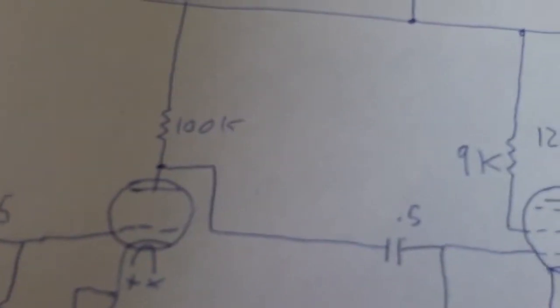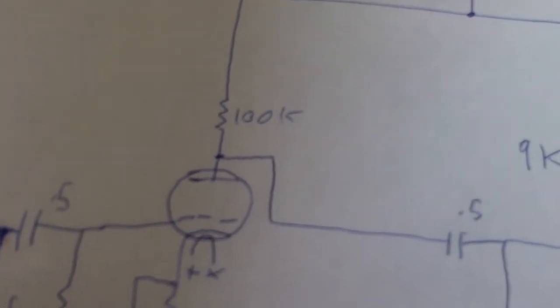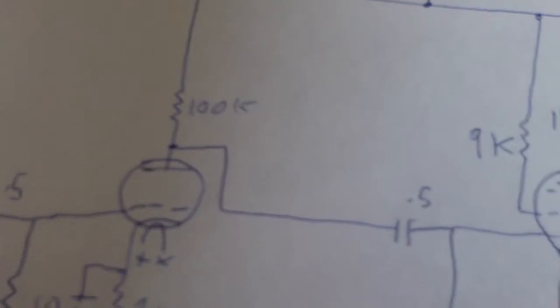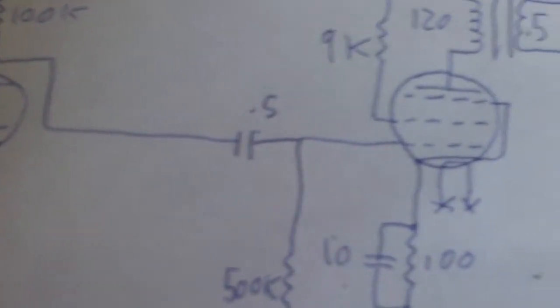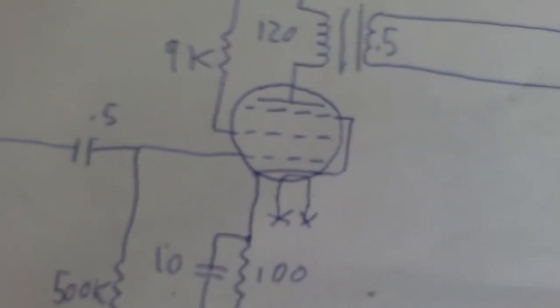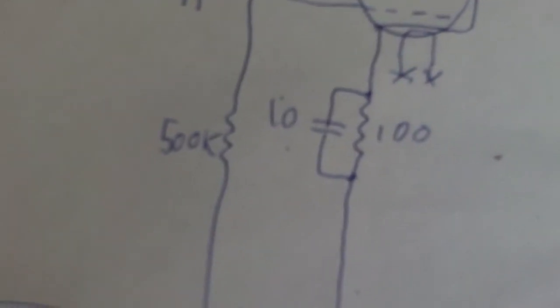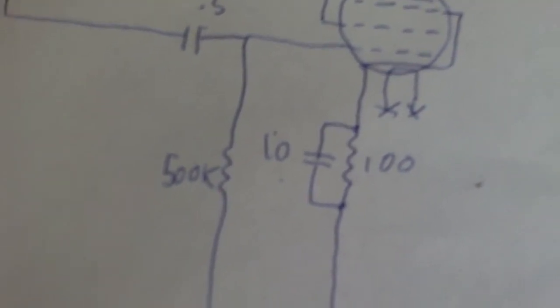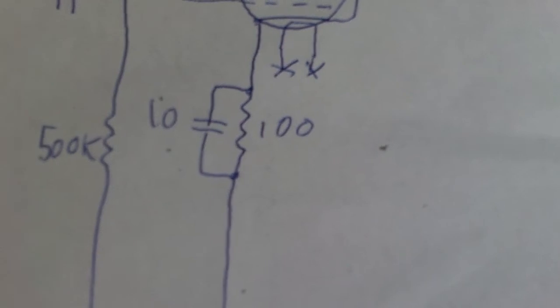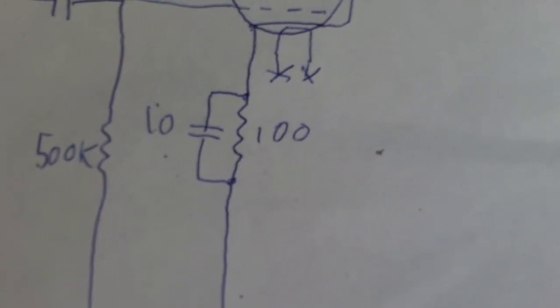That feeds over, also there's a 100k ohm resistor on the plate to B+. Then there's a 0.5 microfarad capacitor into the second tube. And this also has a 500k ohm resistor from the grid to ground. And this one has a 100 ohm cathode resistor and a 10 microfarad bypass.